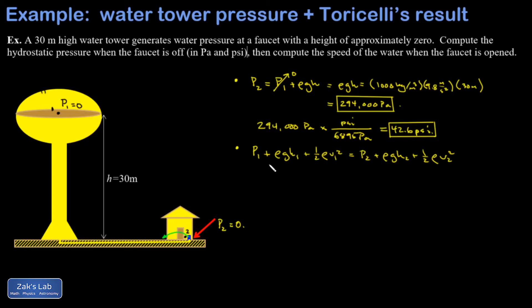So without getting too far into the weeds, pressure is a type of energy density stored in the compression of the fluid. This term is a gravitational potential energy density. This term is a kinetic energy density.